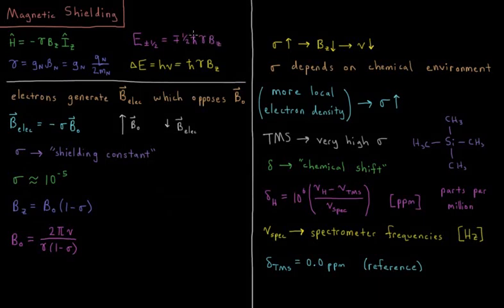So h-bar is a constant, gamma is a constant. The only thing that determines how far our energy levels are separated apart from one another for a given nucleus is what is the strength of the external magnetic field in that z direction.